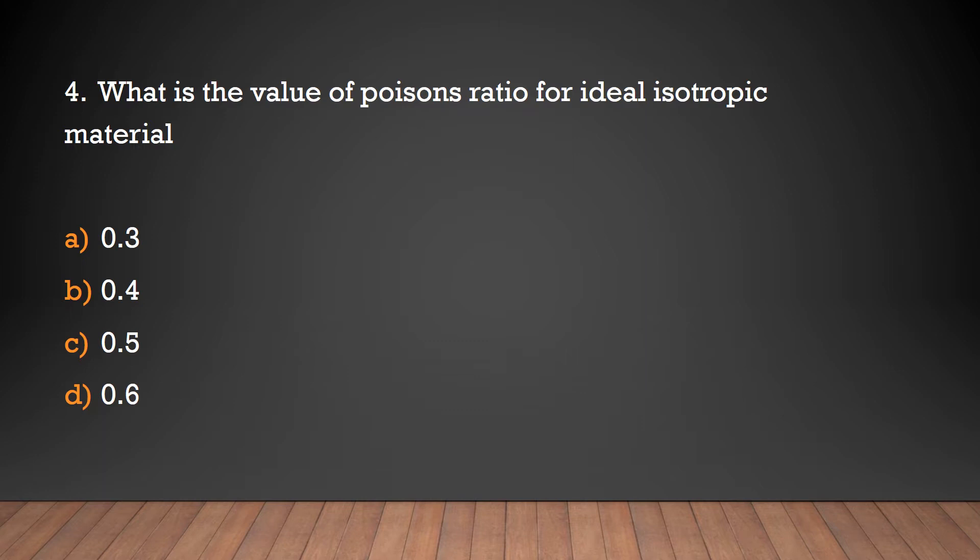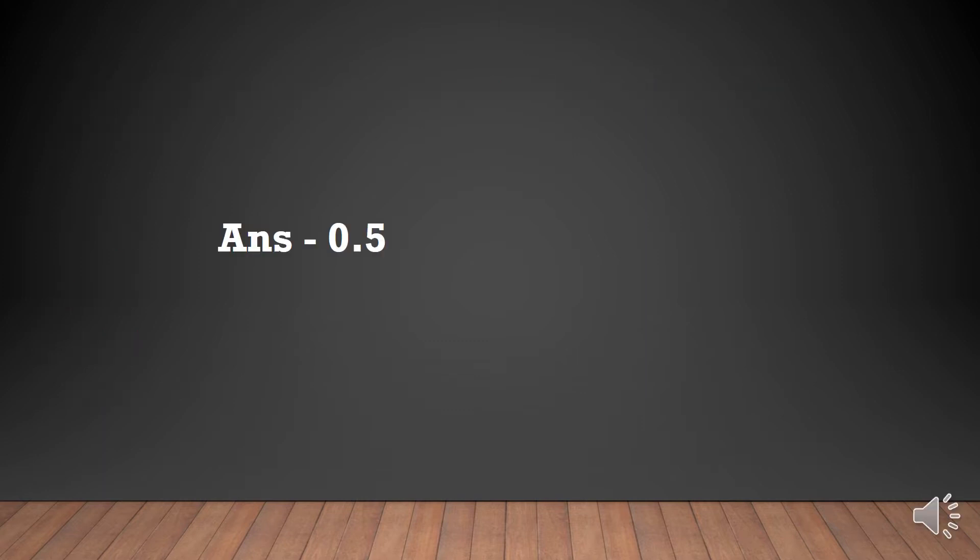What is the value of Poisson's ratio for ideal isotropic material: 0.3, 0.4, 0.5, or 0.6? Answer: 0.5.